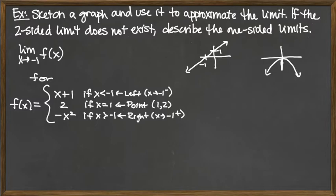The part I need for the line is where x is less than negative 1. That happens to the left of x equals negative 1, going out to the left. So we have an open circle at negative 1 and the line extending to the left — that's the important part of the graph of that line.